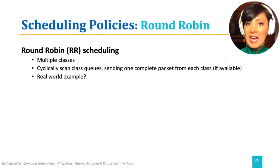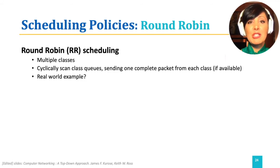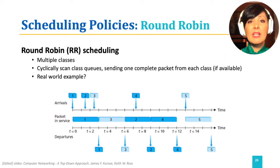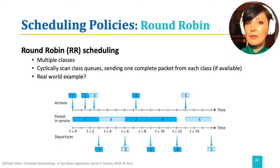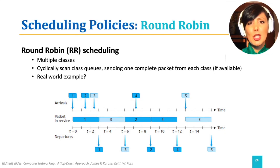This starvation problem could be addressed with round-robin, which scans class queues going in rounds. If there are packets available in each queue, it will send one complete packet from each class per round. For example, round-robin applied to packets 1, 2, and 4 with high priority and packets 3 and 5 with low priority results in sending packets 1, 3, 2, 4, and 5 respectively. Note that packet 3 arrived after packet 2 and had lower priority, but was scheduled before it as it was the turn for that queue. A real-world example is traffic lights merging a few lines of traffic into one — they usually use round-robin.